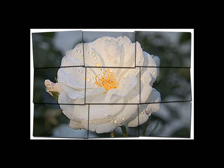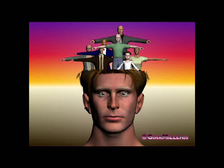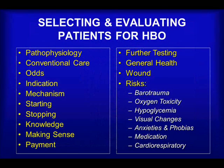For the purpose of this lecture, I'm trying to bring it all together and show you the art of selecting patients for hyperbaric oxygen. The ten things to consider when selecting patients are: the pathophysiology, the conventional therapy, the odds and risks, the indication, the therapeutic mechanism, when to start, when to stop, the knowledge and experience you may have or may have access to regarding treating the condition, whether it actually makes sense, and whether you'll be reimbursed either through a funder or through a research program.